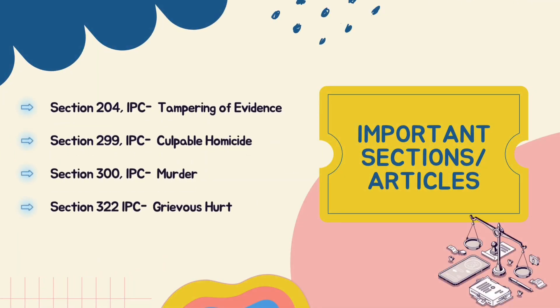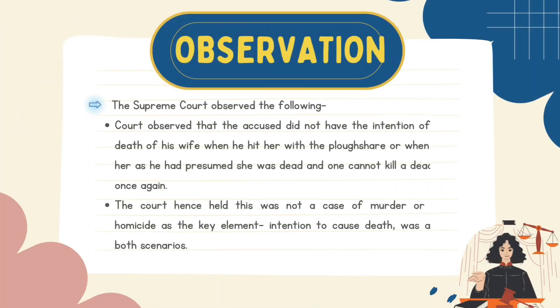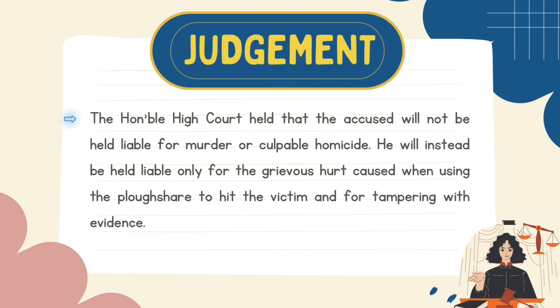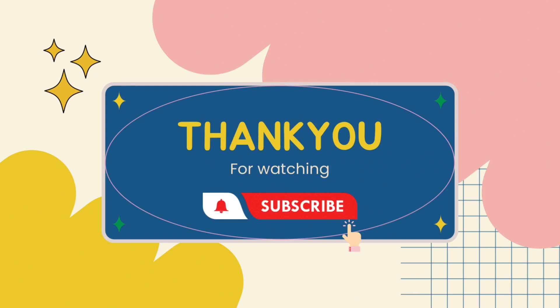The important sections are Section 204, 299, 300, and 322 of IPC. The court observed that there was no intention to kill, and the accused hung his wife to hide his crime and not to kill her. The decision of the court was that it was not a case of murder or culpable homicide, but of grievous hurt and tampering of evidence.